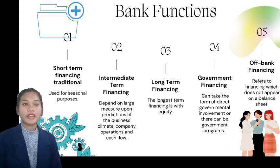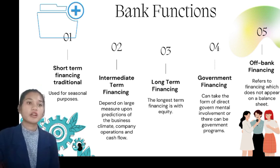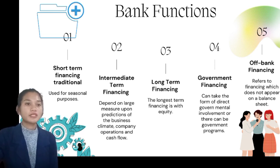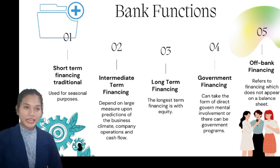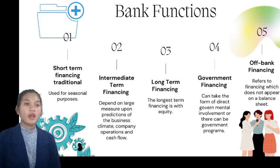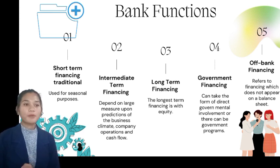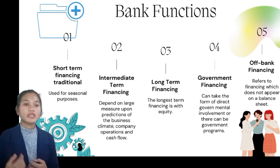The fourth is government financing. Government involvement may be direct or it may take the shape of a program. The government can make borrowing easier in other ways, as well as by offering insurance policies that are subsidized or controlled by the government. The last is off-bank financing. A corporation may guarantee the independence of a subsidiary or a company with whom it has a business relationship. The debt appears on the balance sheet of the company for which the guarantee is issued, but it is not recorded in the issuing corporation's account.